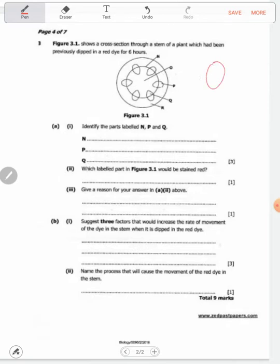N is in the middle, so that's the cambium. P is outside from the pith, so we call it the phloem. Then Q, which is inside, we call it the xylem.